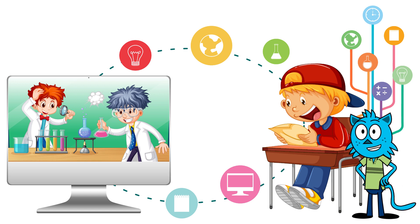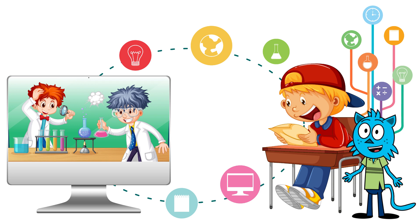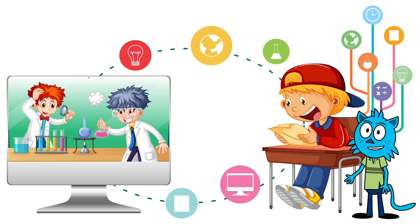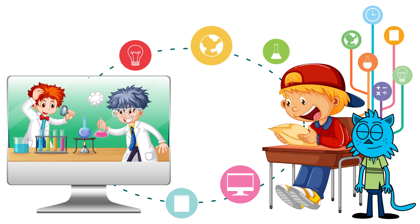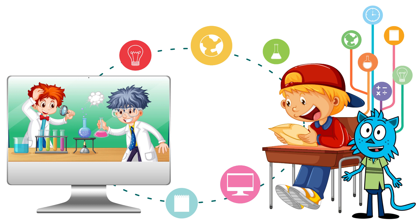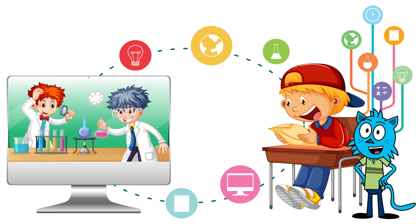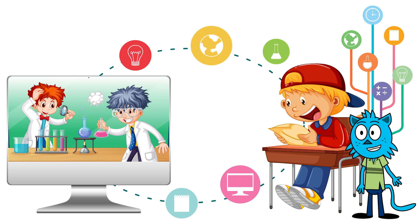A program is a set of instructions that tells a computer what to do. It's kind of like a recipe that tells your computer how to do a specific task. Think of it like a game of Simon Says — the computer is Simon, and the program is the set of instructions that you have to follow. The program tells the computer what to do step by step, and the computer does it exactly as it's told.